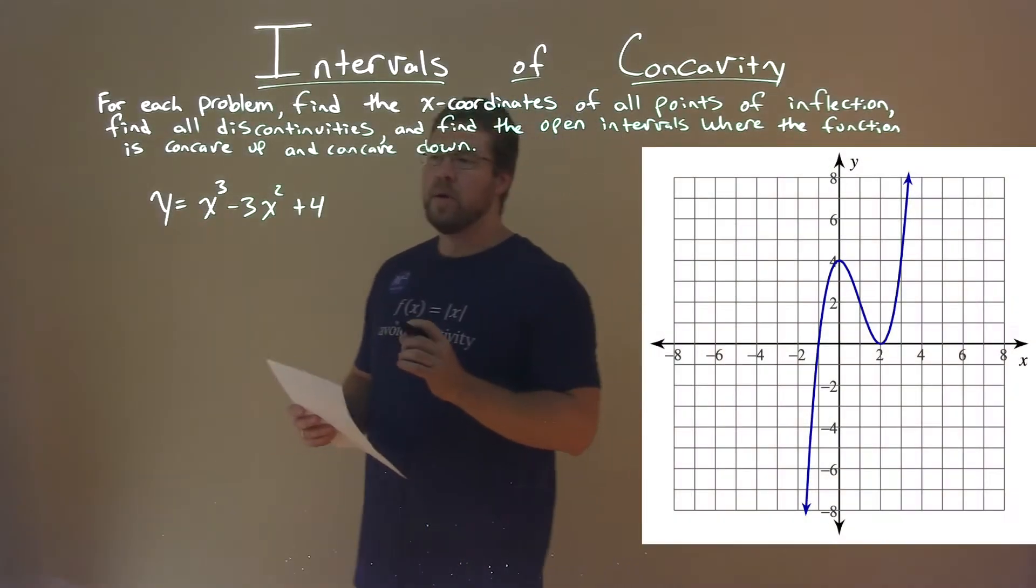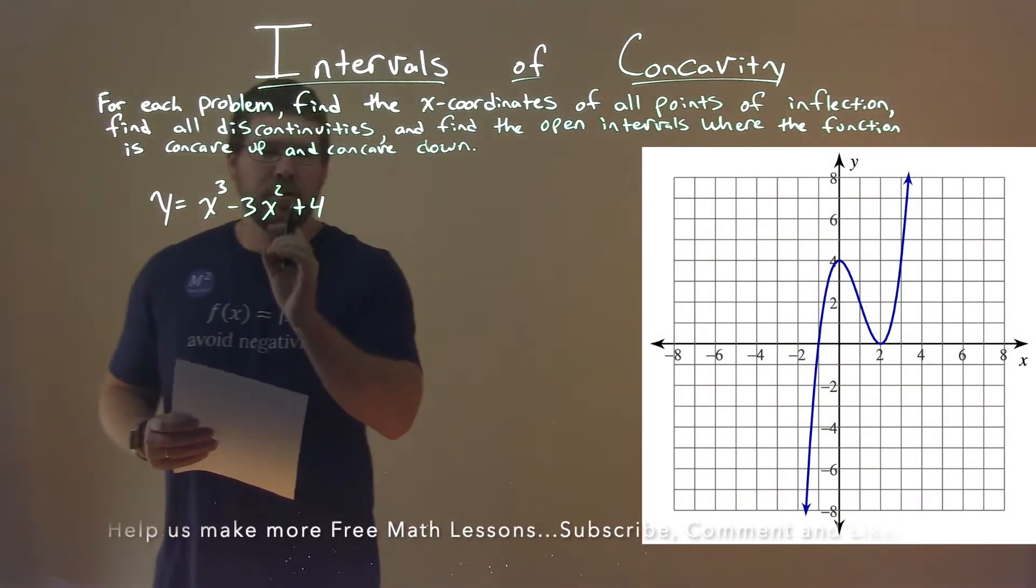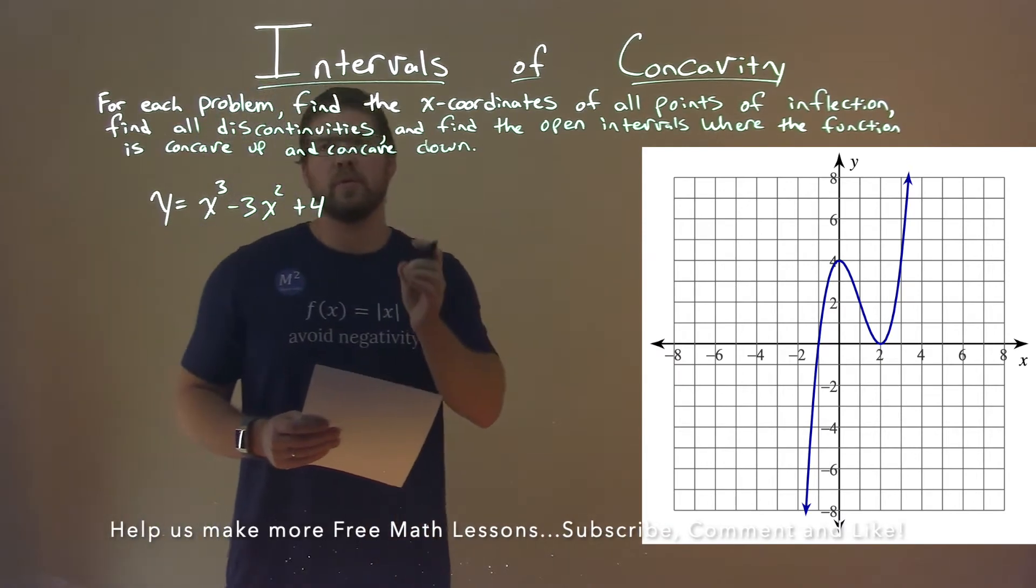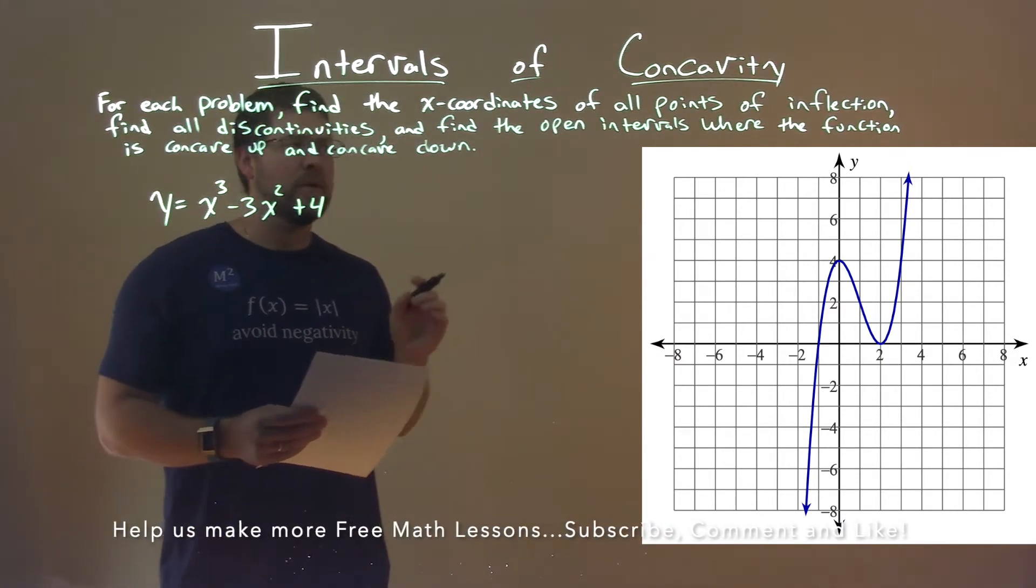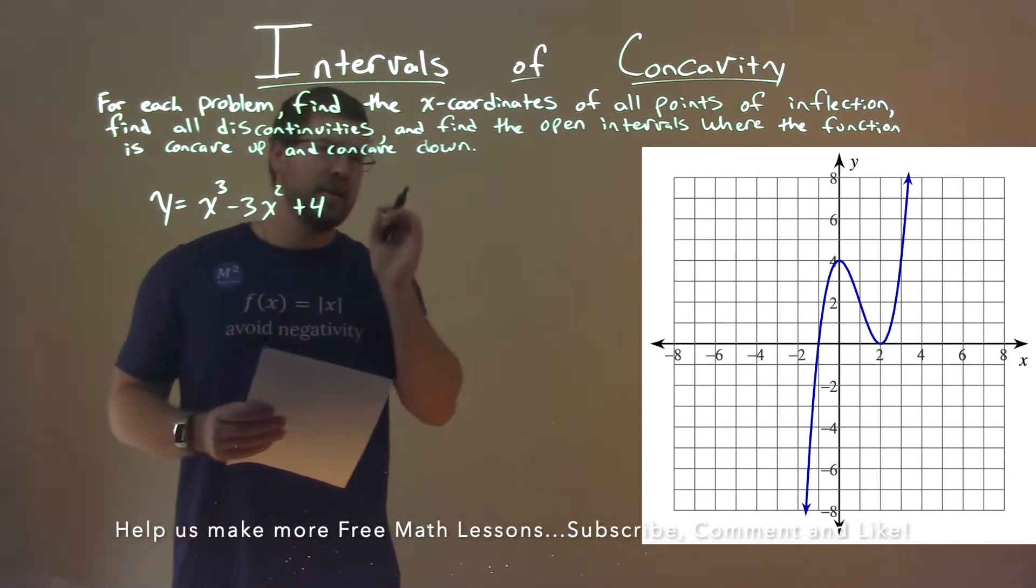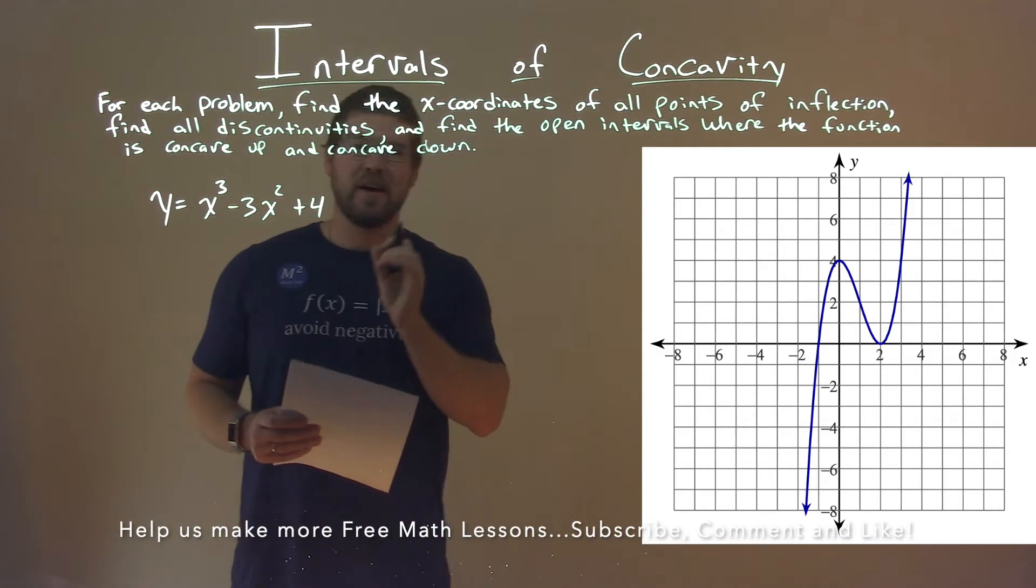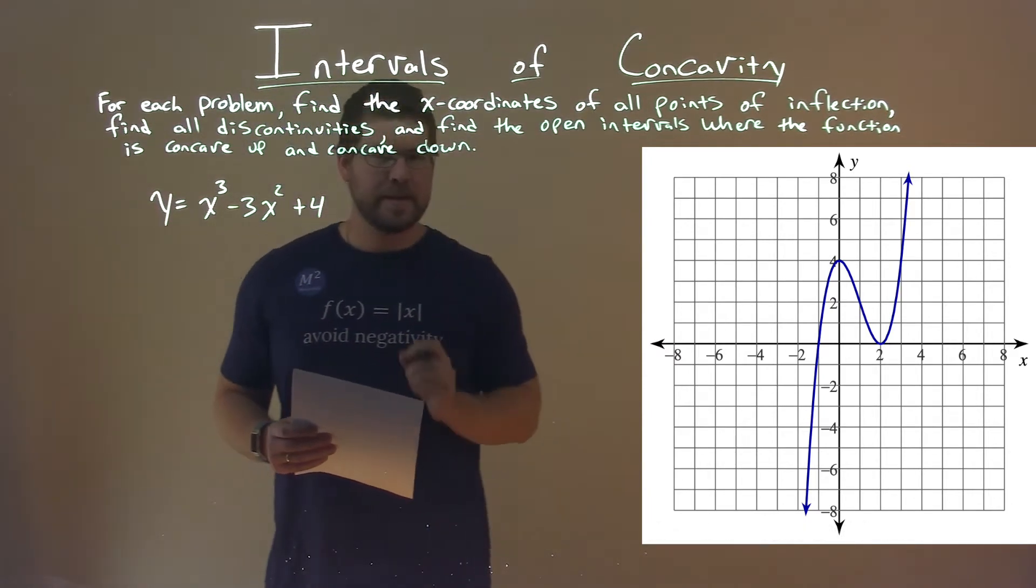We're given this problem right here: y equals x to the third power minus 3x squared plus 4. And we want to find the x-coordinates of all the points of inflection, the discontinuities, and the intervals where the function is concave up and concave down.